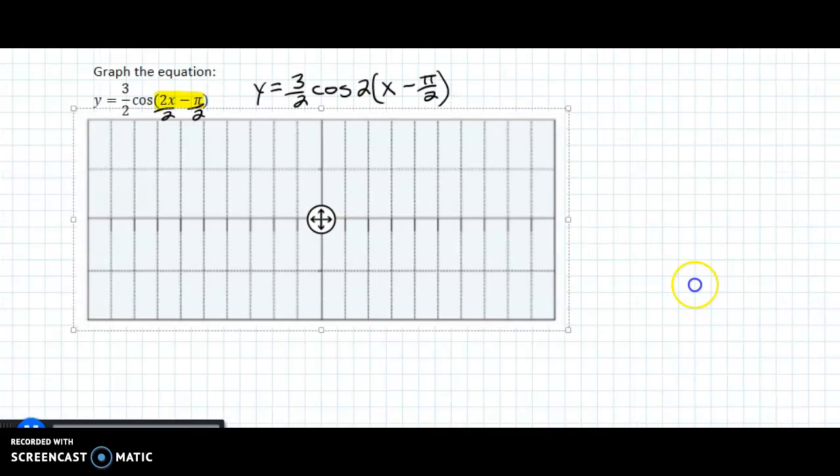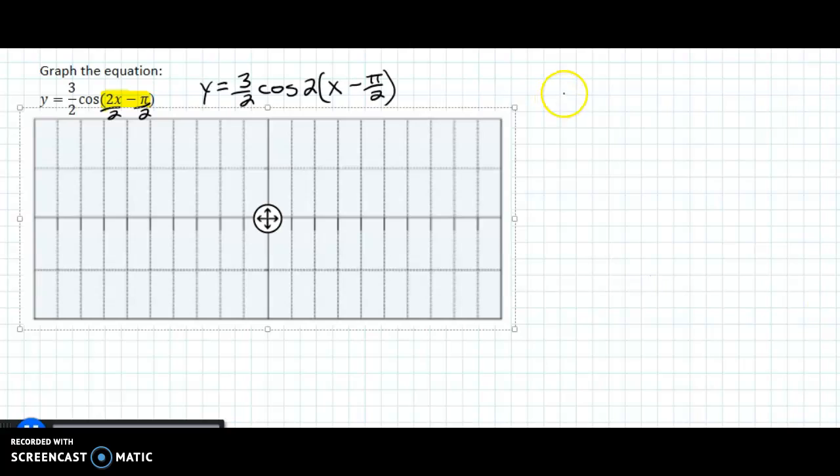let's look at the period. So the period is 2π over b, which is 2π over 2, and that is just π, so a period of π.